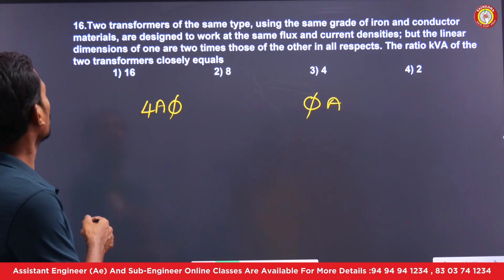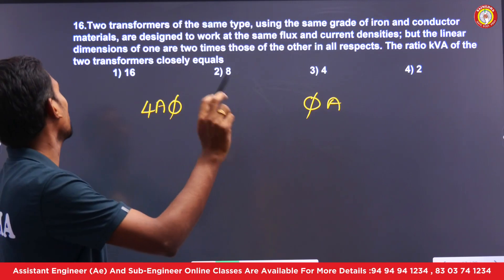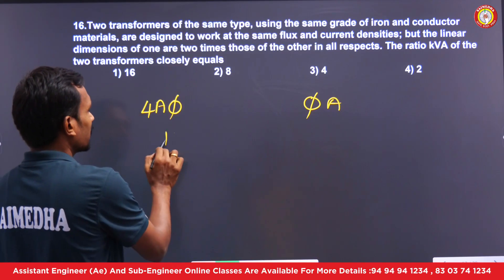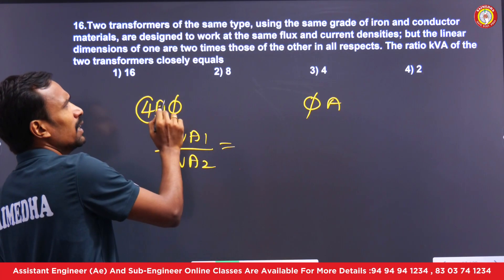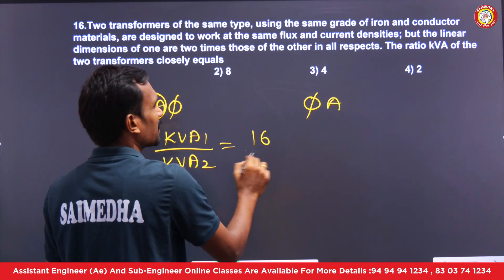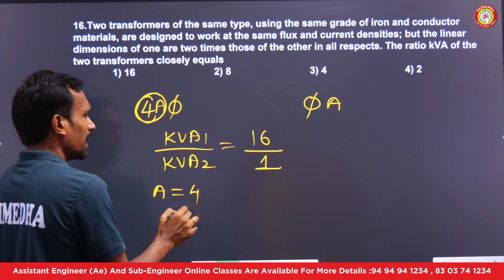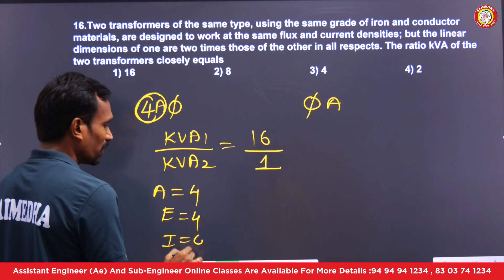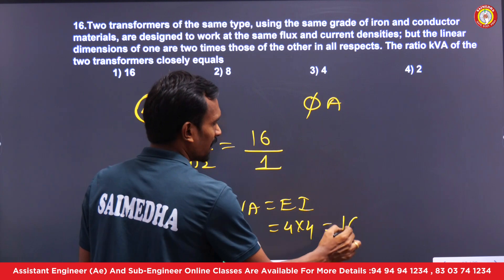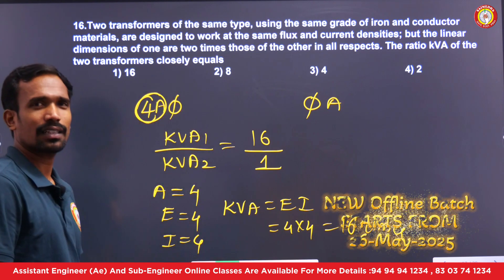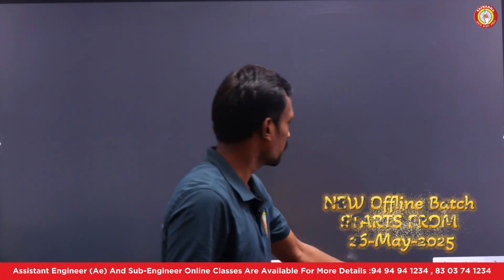Compare the KVA ratings of the two transformers. When the linear dimensions are increased by two times, the KVA rating increases by 16 times. Because area is four times, EMF is four times, current is four times, and KVA = voltage × current = 4 × 4 = 16 times. So when linear dimensions are doubled, the KVA rating increases by 16 times.